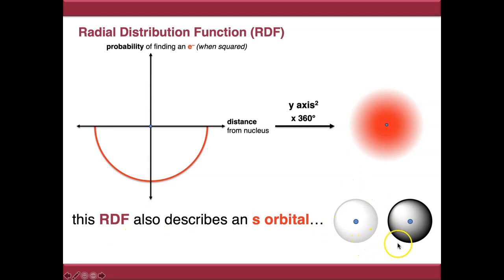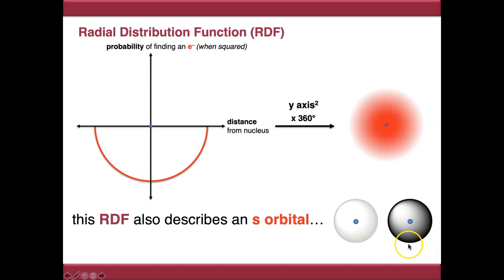The way to describe these phases is as 'coloured in' and 'white'. This will become important later when we start making molecular orbitals, but for now you just need to know that an s-orbital can exist as either of these two phases.